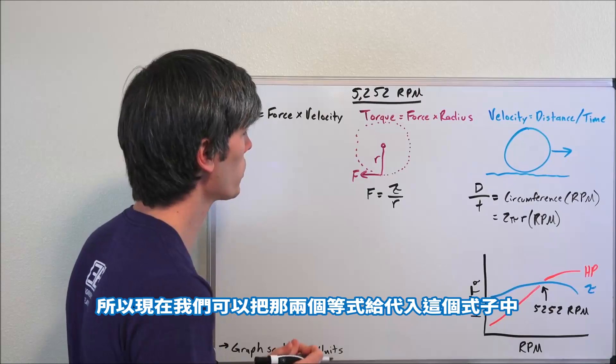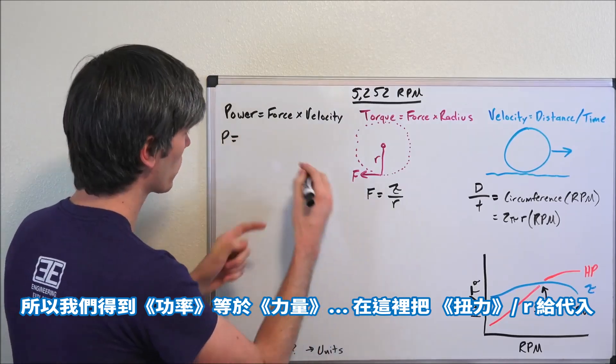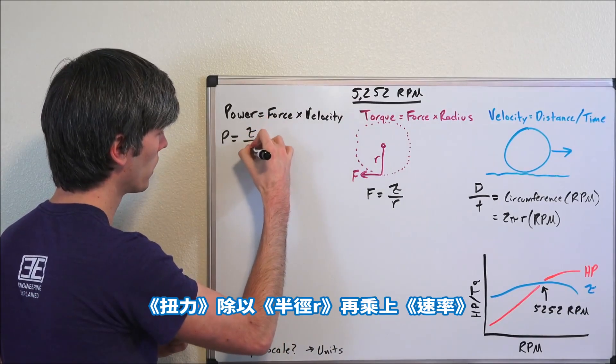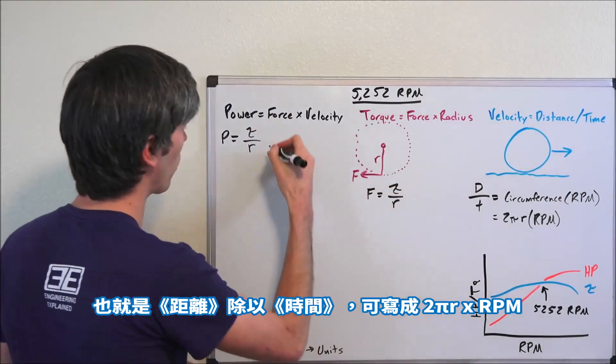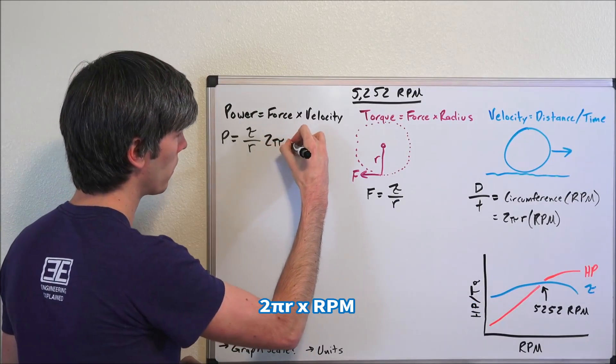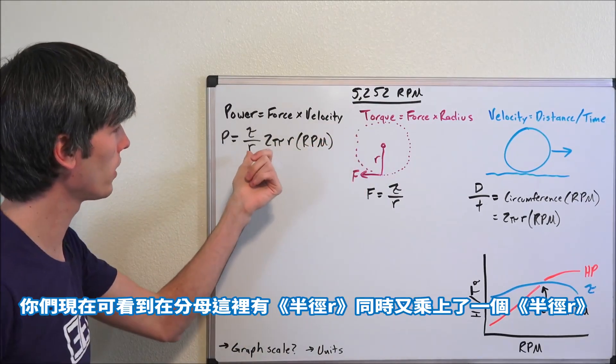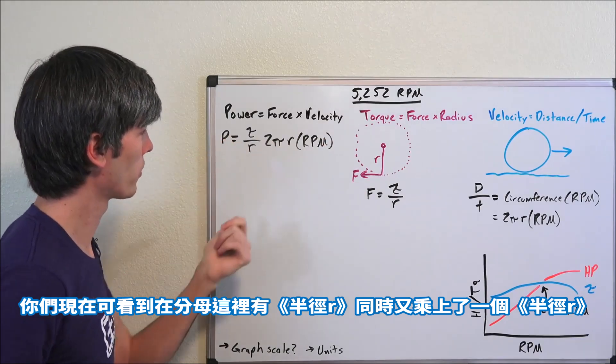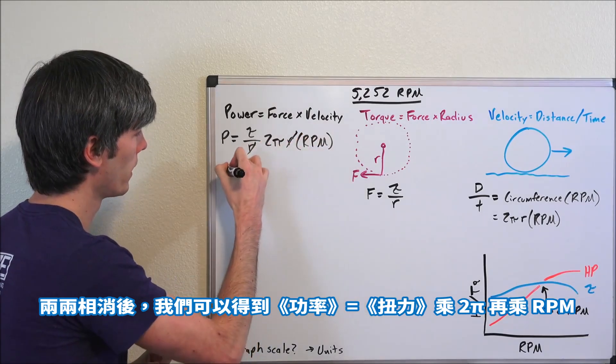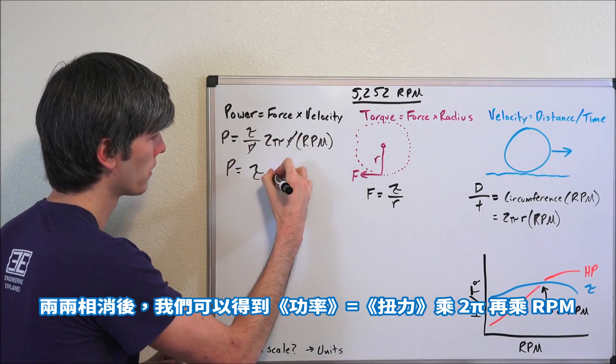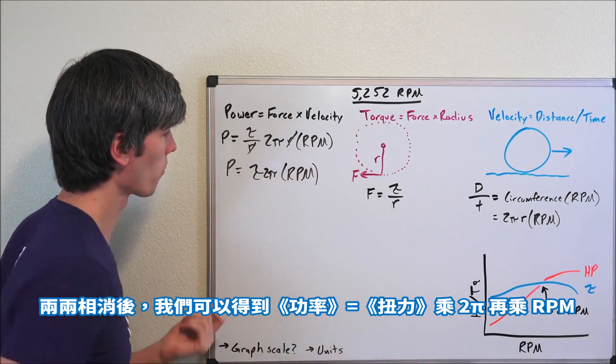So now we can substitute in each of these equations. So we can say that power equals force - torque divided by radius - times velocity, distance divided by time, or 2πr times RPM. Well, now you can see that you have radius on the bottom as a fraction, and you're also multiplying by radius. So we can scratch those out and say that power is equal to torque times 2π times RPM. Great.